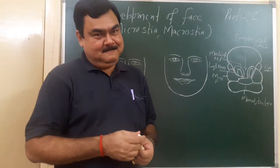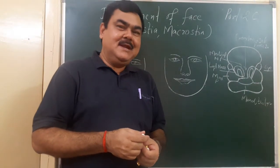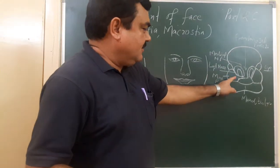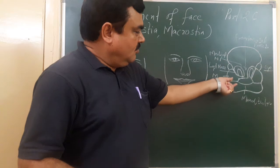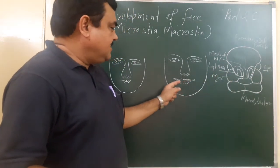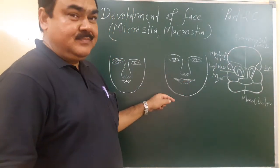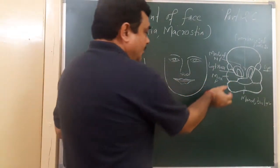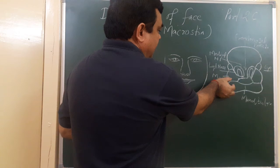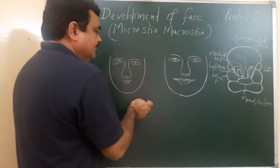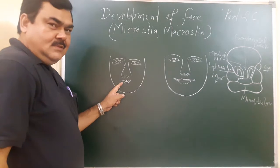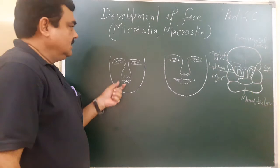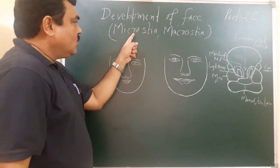Another defect in development of the face. This is the maxillary process, this is the mandibular process. These processes fuse laterally and form the cheek here. If this fusion is more and it extends more towards the medial side, then there is a small opening of the mouth. This is microstomia.